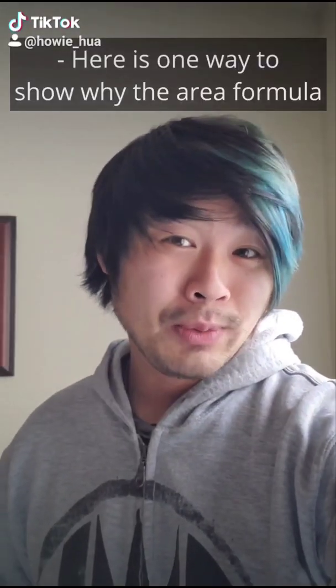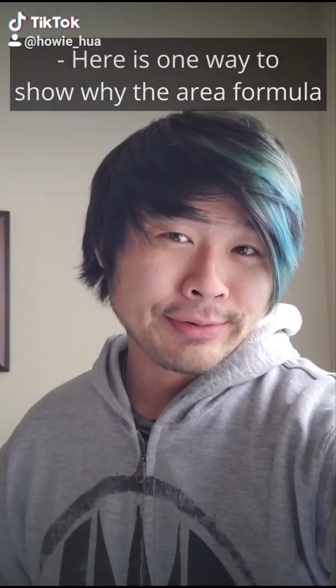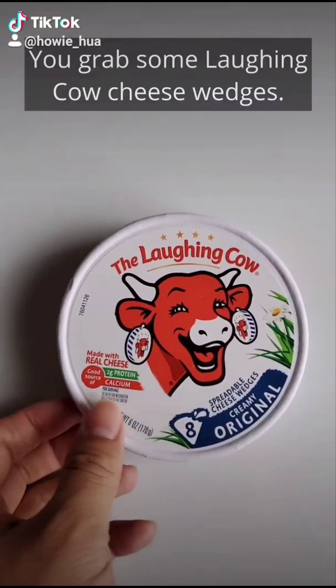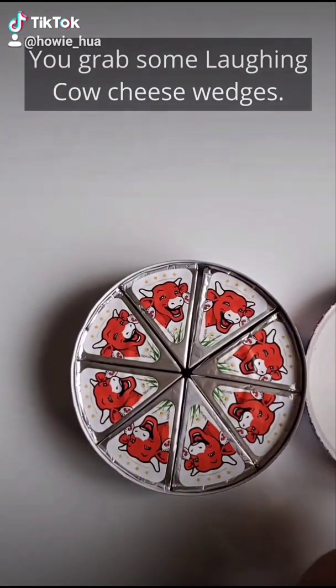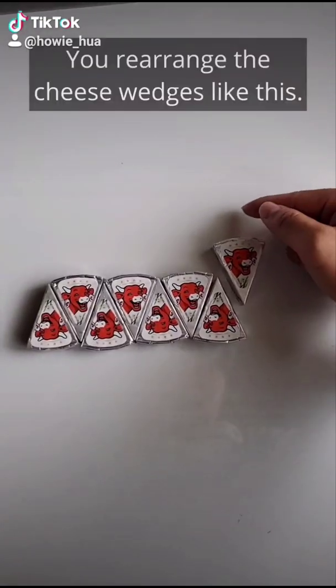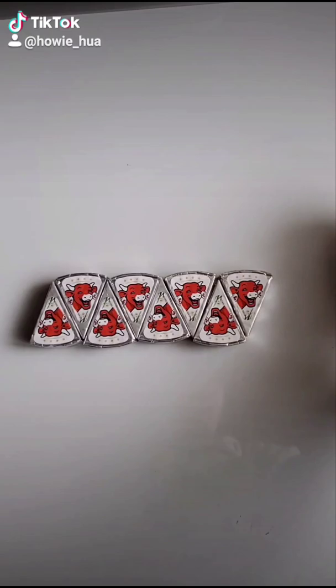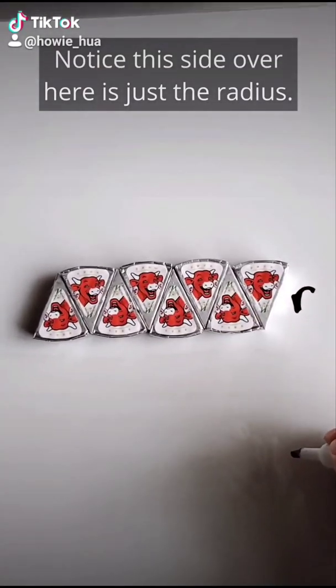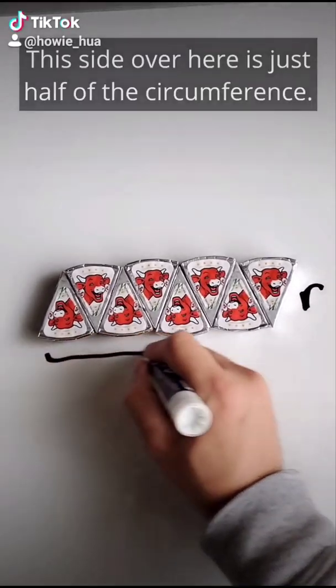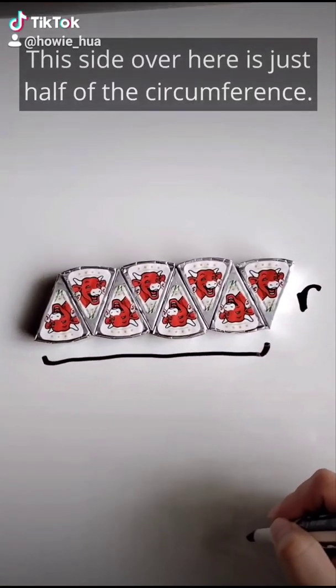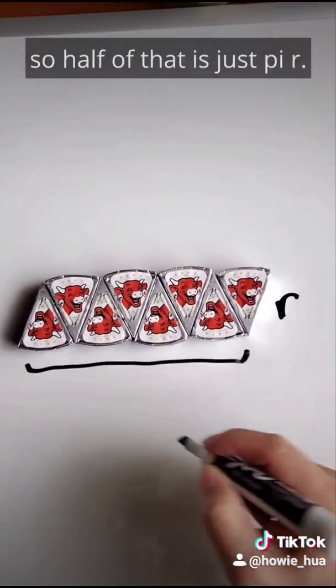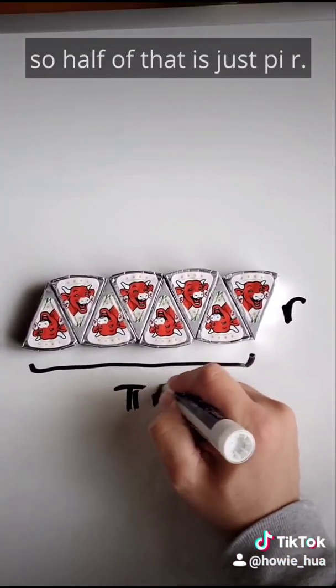Here is one way to show why the area formula of a circle is pi r squared. You grab some laughing cow cheese wedges. You rearrange the cheese wedges like this. Notice this side over here is just the radius. And this side over here is just half of the circumference.